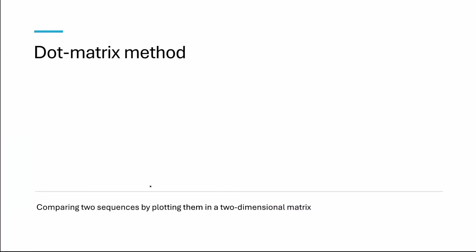Dot matrix method, also known as the dot plot method, is a graphical method of sequence alignment that involves comparing two sequences by plotting them in a two-dimensional matrix.